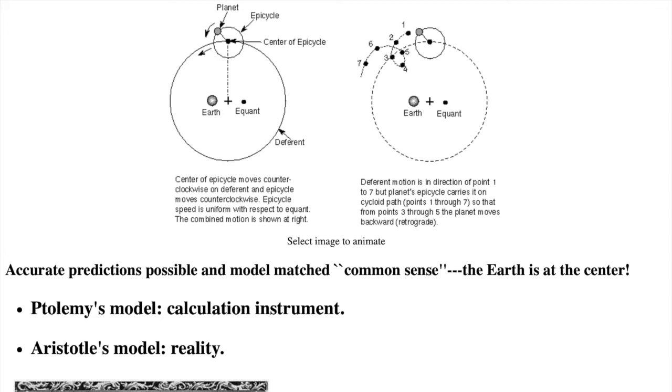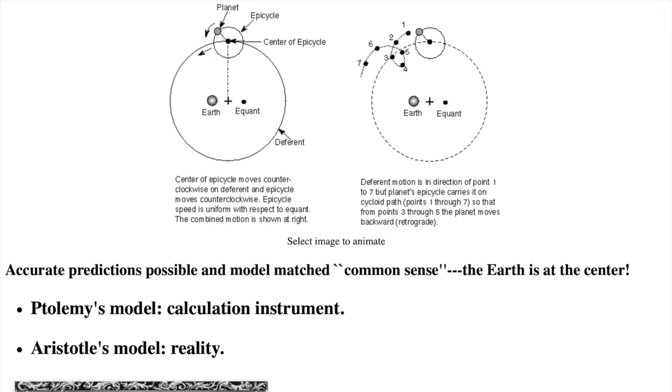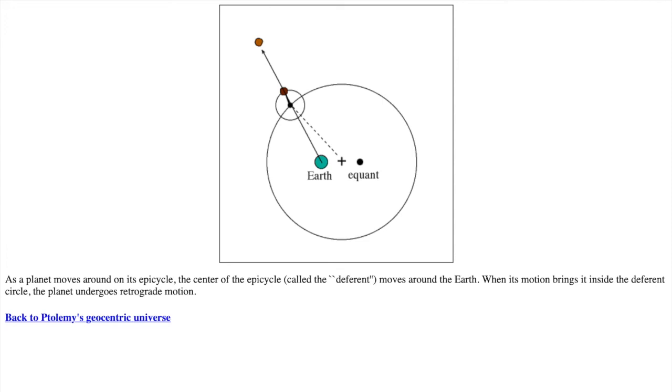One other important piece for his model lasting so long is that his model did work. It accurately predicted the planet positions. When you select the image, you'll bring up an animation of the epicycle action. The planet is the brown circle on the epicycle. The orange circle is where the planet appears to be as viewed from Earth. The planet appears to move backward when it is on the inside part of its epicycle. So that also explained why planets appear brighter when they are retrograding. They are closer to the Earth.